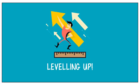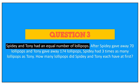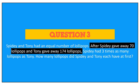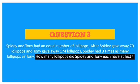Now it's time for the final math question. This is an example of a question that compares the number of items between two people when something happens — this time, instead of a transfer, both of them gave away a part of what they had. Spidey and Tony had an equal number of lollipops. After Spidey gave away 70 lollipops and Tony gave away 174 lollipops, Spidey had 3 times as many lollipops as Tony. How many lollipops did Spidey and Tony each have at first?